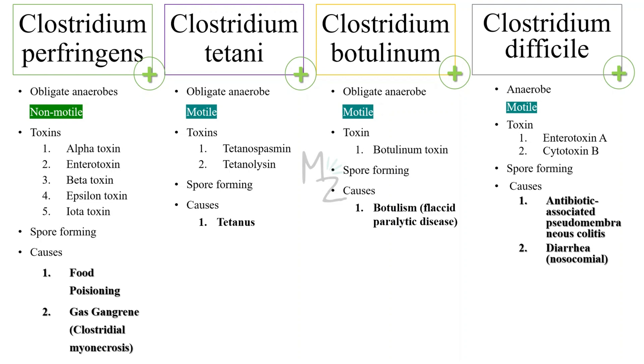All four species of Clostridia are responsible for producing spores in conditions where survival is difficult — that is, when environmental conditions are not favorable to their growth.